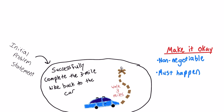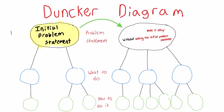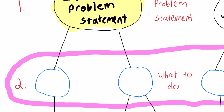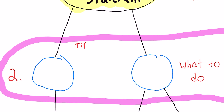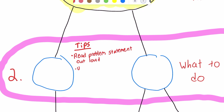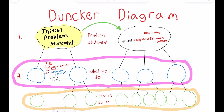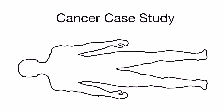The second critical part of the diagram is coming up with the 'what to do' for each of the two problem trees. If you're struggling to fill in this part, it can be helpful to read the problem statement out loud, or try brainstorming strategies like SCAMPER or random stimulation, which will be discussed in a later video. Once you have your problem statements and 'what to do' options, coming up with 'how to do it' is usually pretty easy.